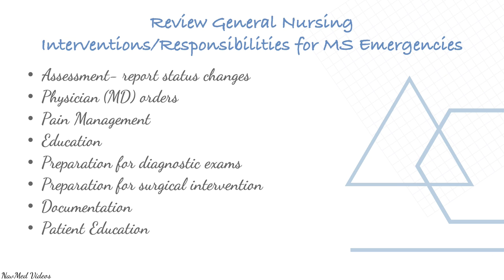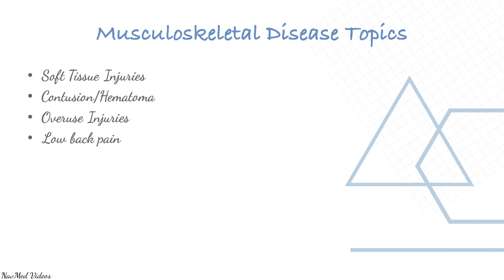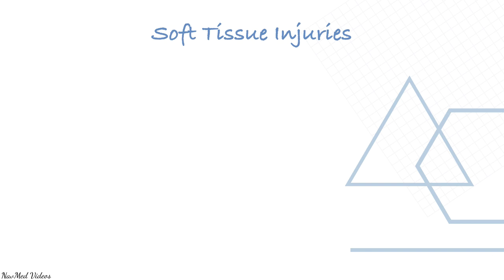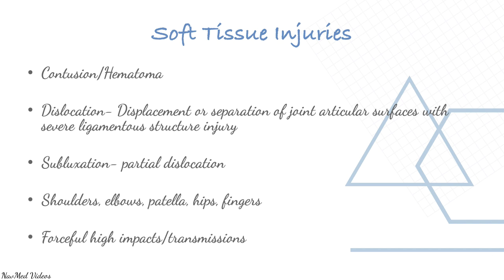Musculoskeletal conditions seen in the emergency department include soft tissue injuries, contusions, overuse injuries, low back pain, dislocations, fractures, amputations, joint injuries, and arthritis. Soft tissue injuries include contusions or hematomas, dislocations, subluxations of the shoulder, elbows, patella, hips, and fingers, often from forceful high-impact transmissions.